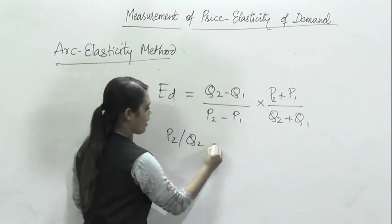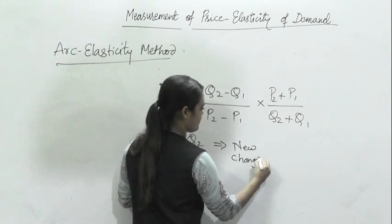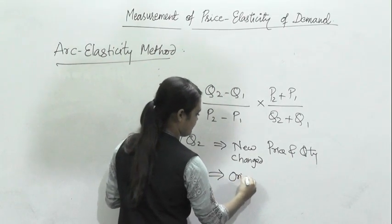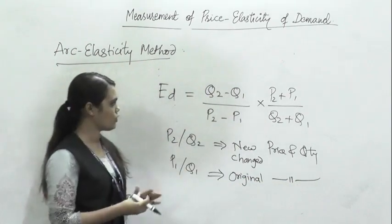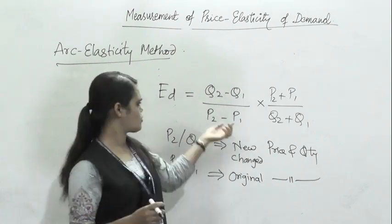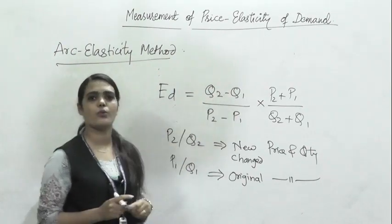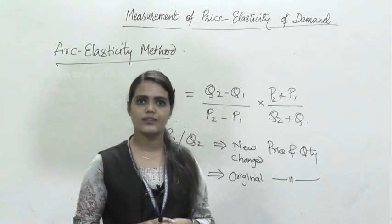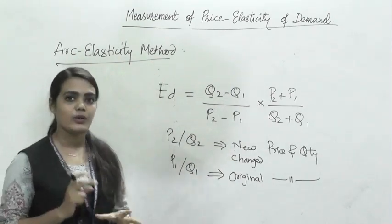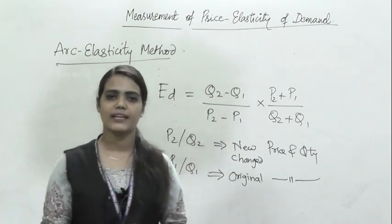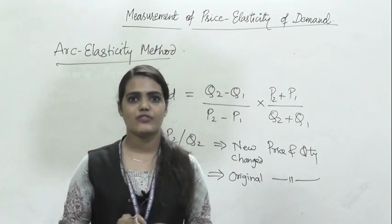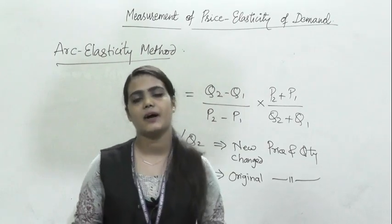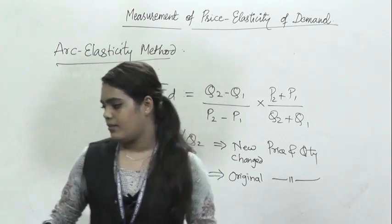P2 and Q2 are your new or changed price and quantity, while P1 and Q1 are your original price and quantity. Change in price is the base, so you take P2 minus P1, and due to that change, Q2 minus Q1 is the change in quantity. This is the arc elasticity method. If the value is less than one, demand is inelastic; if greater than one, it is relatively elastic.